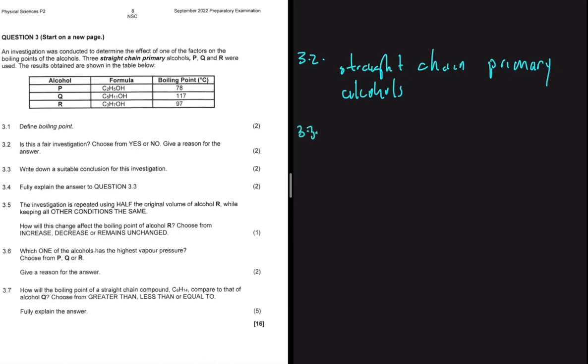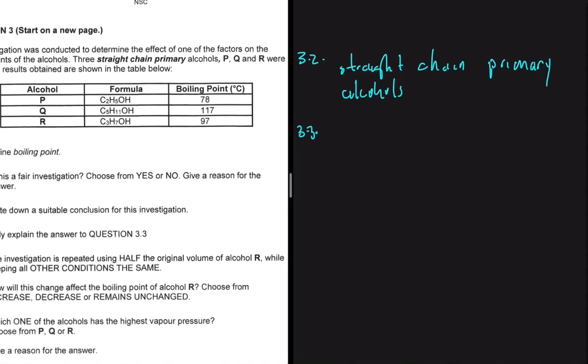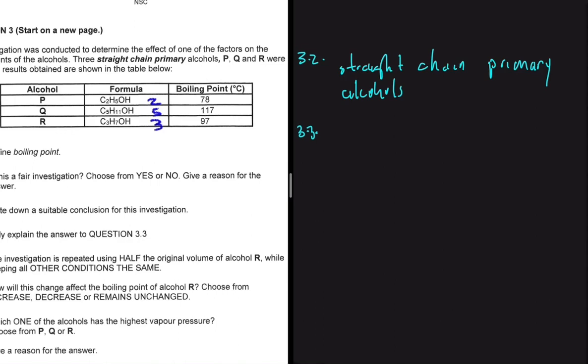And 3.3 is saying, write down a suitable conclusion for this investigation. So let's look at the data in our tables below and conclude. For alcohol P, we have two carbons and a boiling point of 78 degrees Celsius. For alcohol Q, we have five carbons and a boiling point of 170 degrees Celsius. For alcohol R, we have three carbons and a boiling point of 97 degrees Celsius. We can see here that the boiling point increases as the number of C atoms increases.